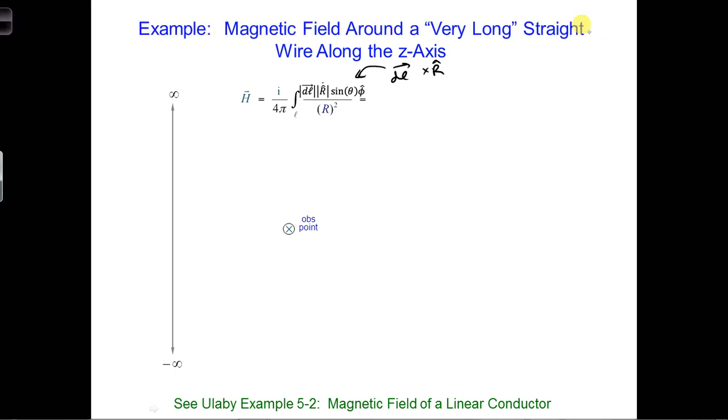Since we're expecting the magnetic field to be circulating around the wire, cylindrical coordinates work really well for this problem if we align the z-axis with the wire axis. So this would be the z direction.